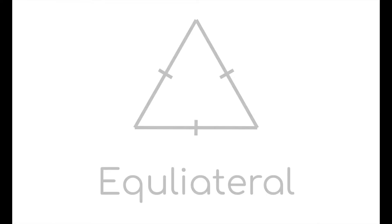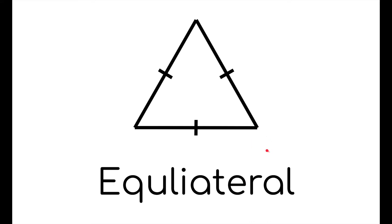One type of triangle is called an equilateral triangle. This is a triangle with all three sides that are the same. An equilateral triangle also has the property that all of the angles are the same and are 60 degrees.